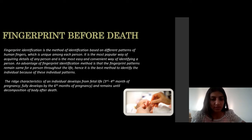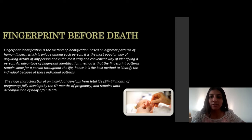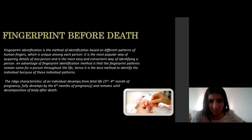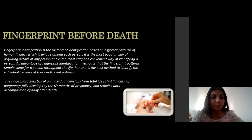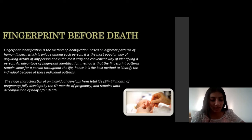The fingerprint characteristics of a fetal life are fully developed in the third or fourth month of pregnancy, and are completely developed by the sixth month of pregnancy. Even when the body is decomposed, the fingerprint remains, which is why it is a very good way for a person's identification.